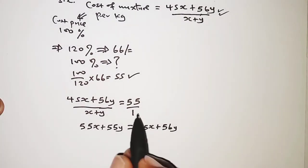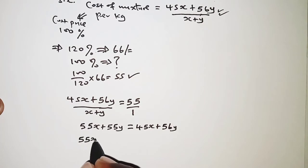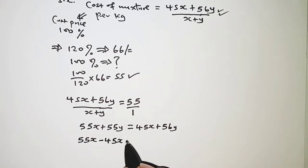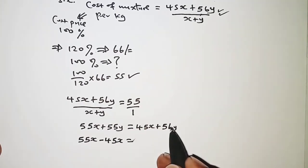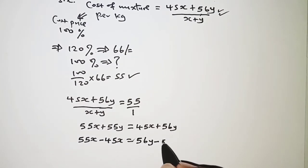45x crossing to this side will simply become 55x minus 45x, and on the right hand side we have 55y crossing so that we have 56y minus 55y. So the left hand side becomes 10x and the right hand side becomes y.